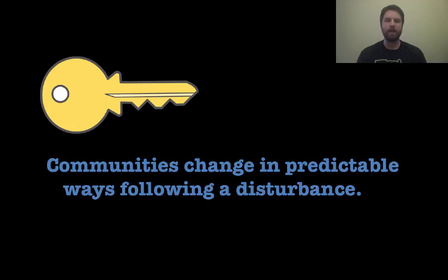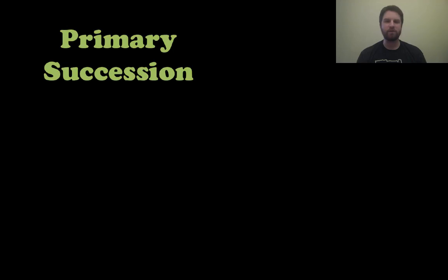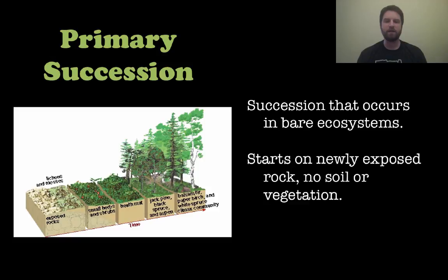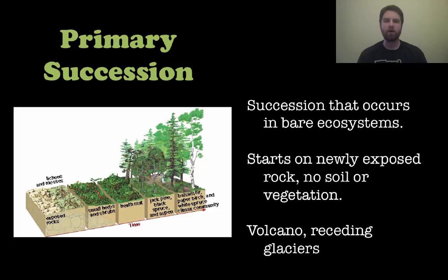We're going to look at two types of succession. The first is primary succession — that is a succession that occurs in a bare ecosystem. It starts on exposed rocks with no soil and no vegetation whatsoever, usually following something like a volcanic eruption or a receding glacier.